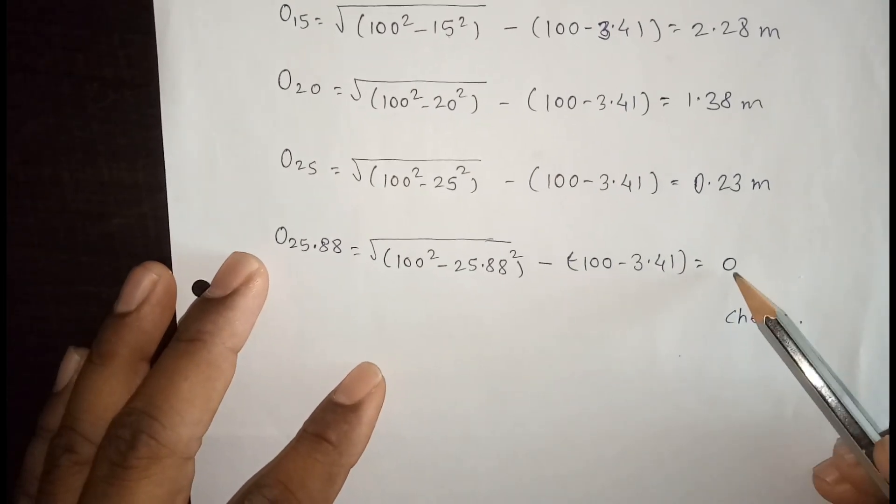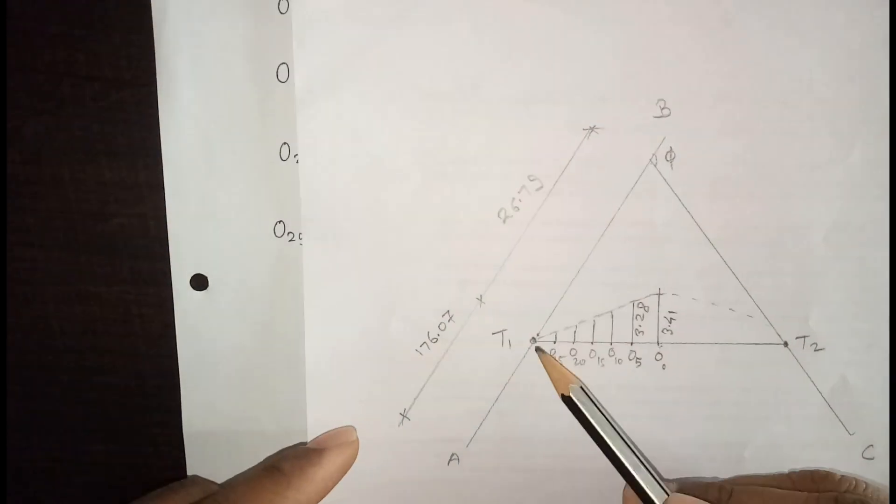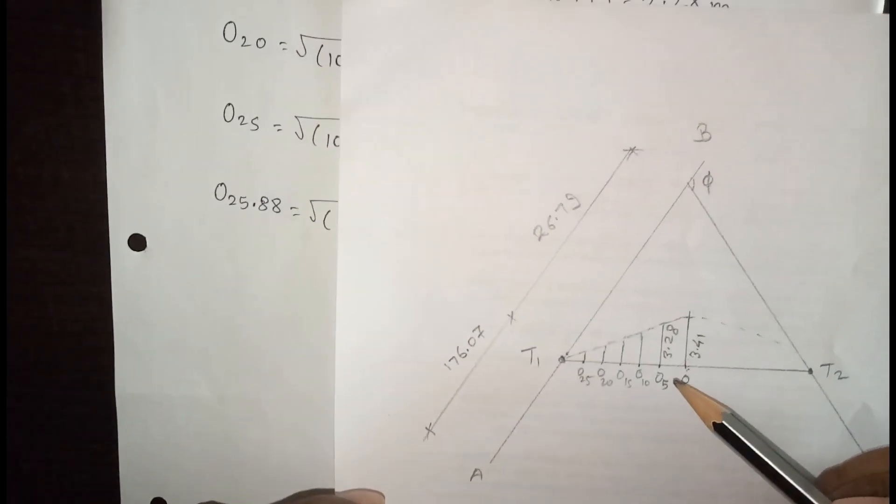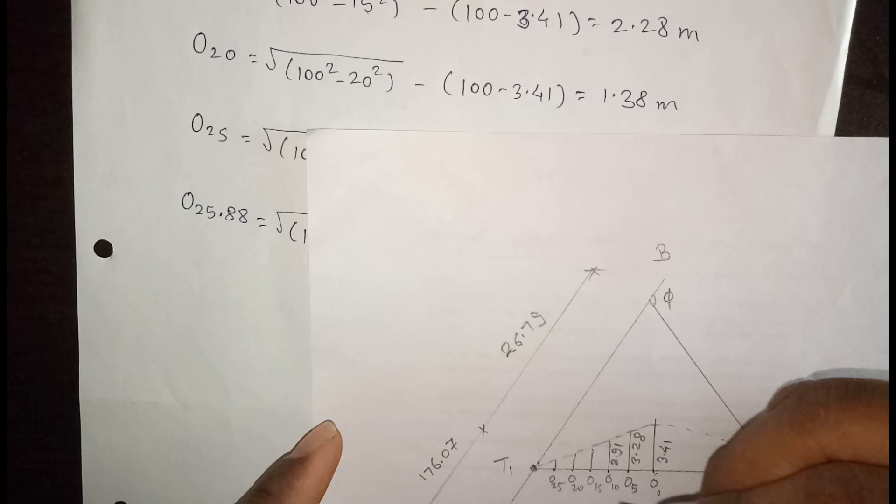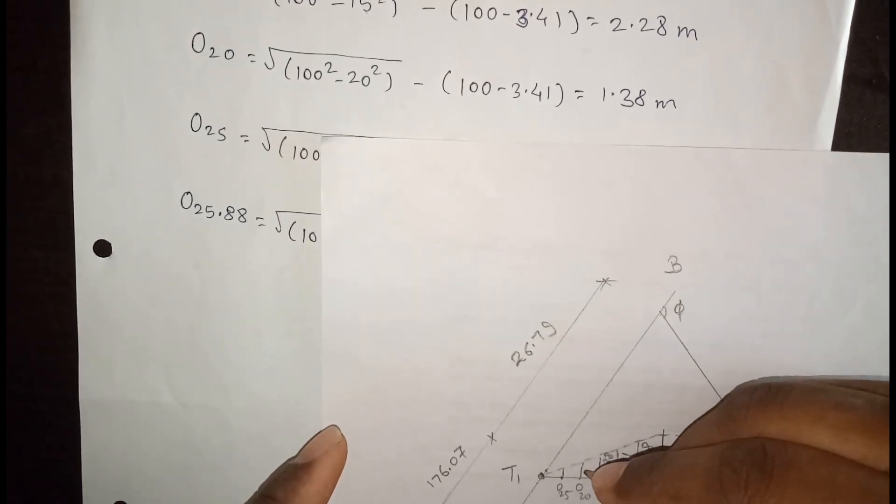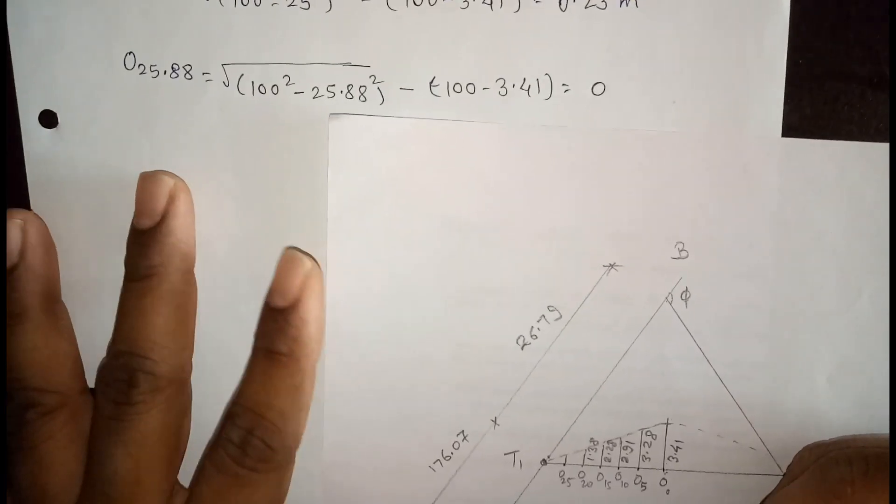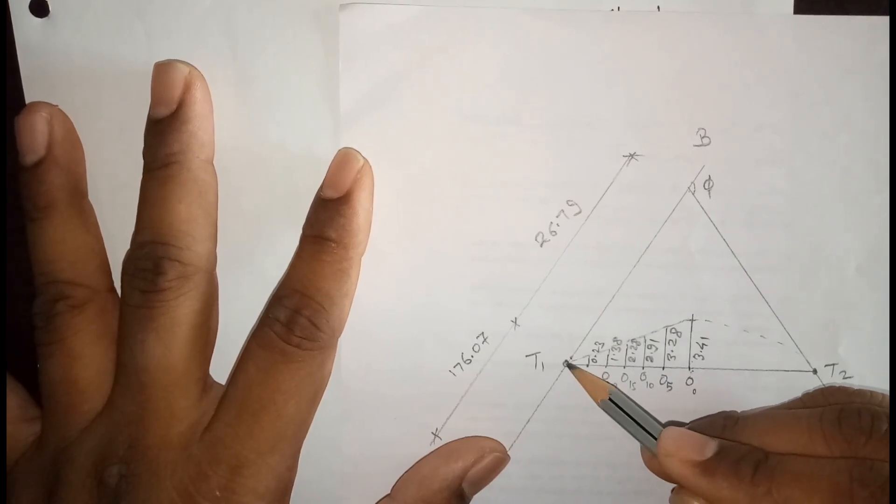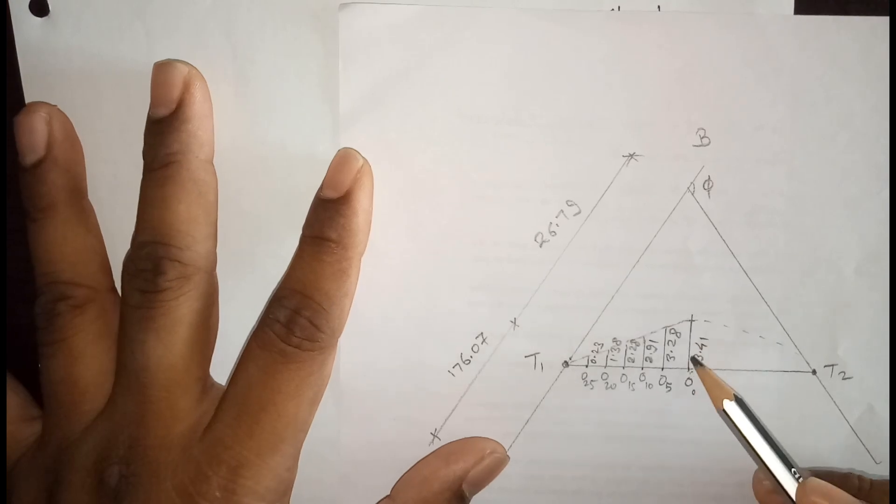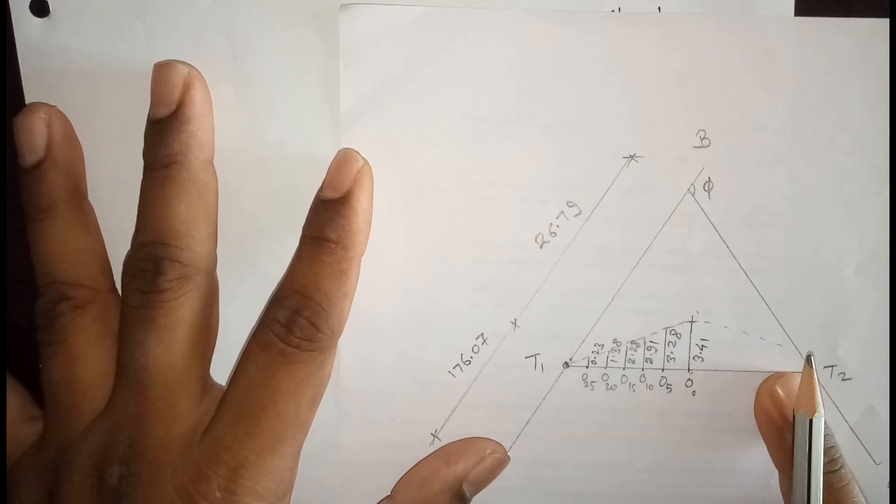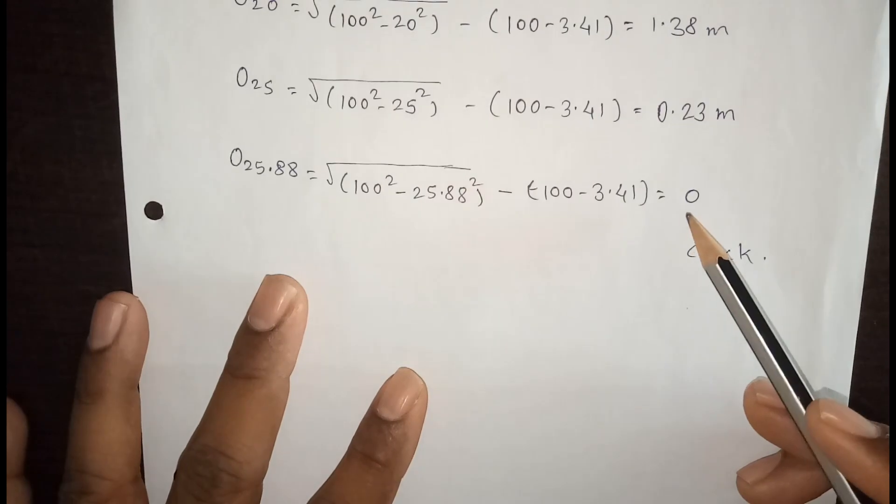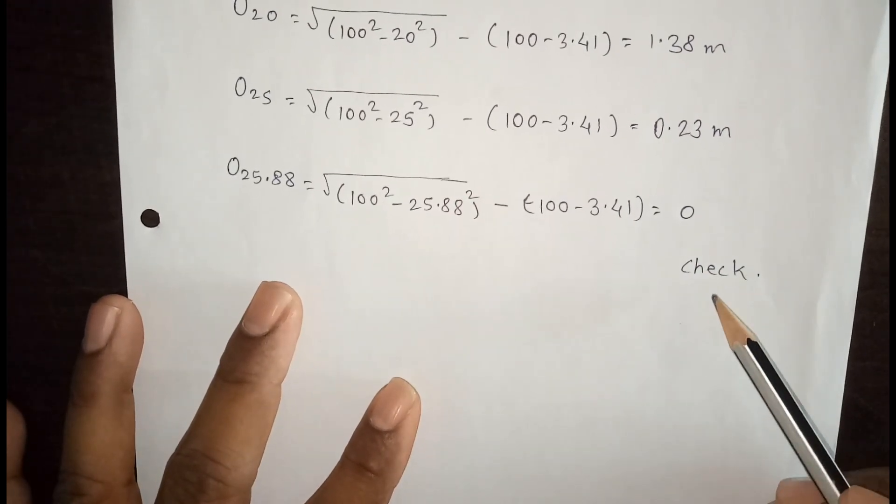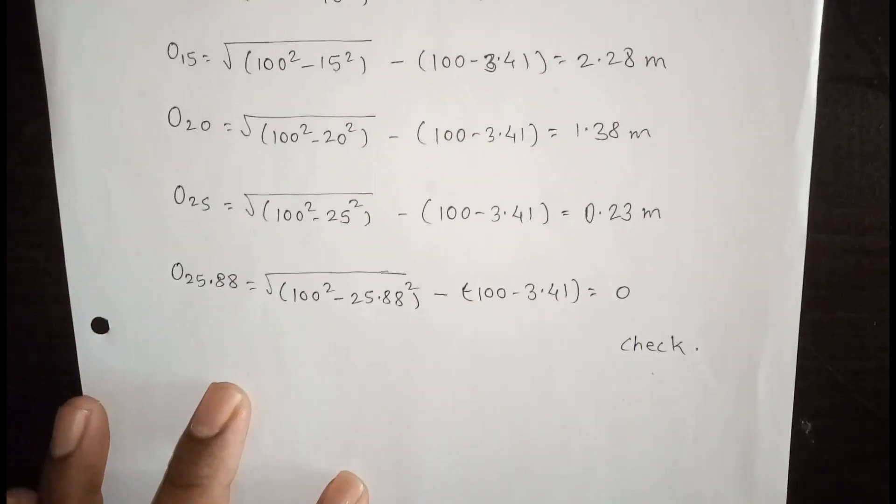At the last you should get 0, because our curve is starting from this point, that is T1. So this is 3.28, next one is 2.91, next one is 2.28, then 1.38, then 0.23, and last one is 0. Because our starting point of the curve is T1 and this is the highest point on the curve. The same will be copied here. That's why we have only consider half curve. And this is the check. At the last point you should get 0 height. So this is the check. That means our calculations are right. Thank you.